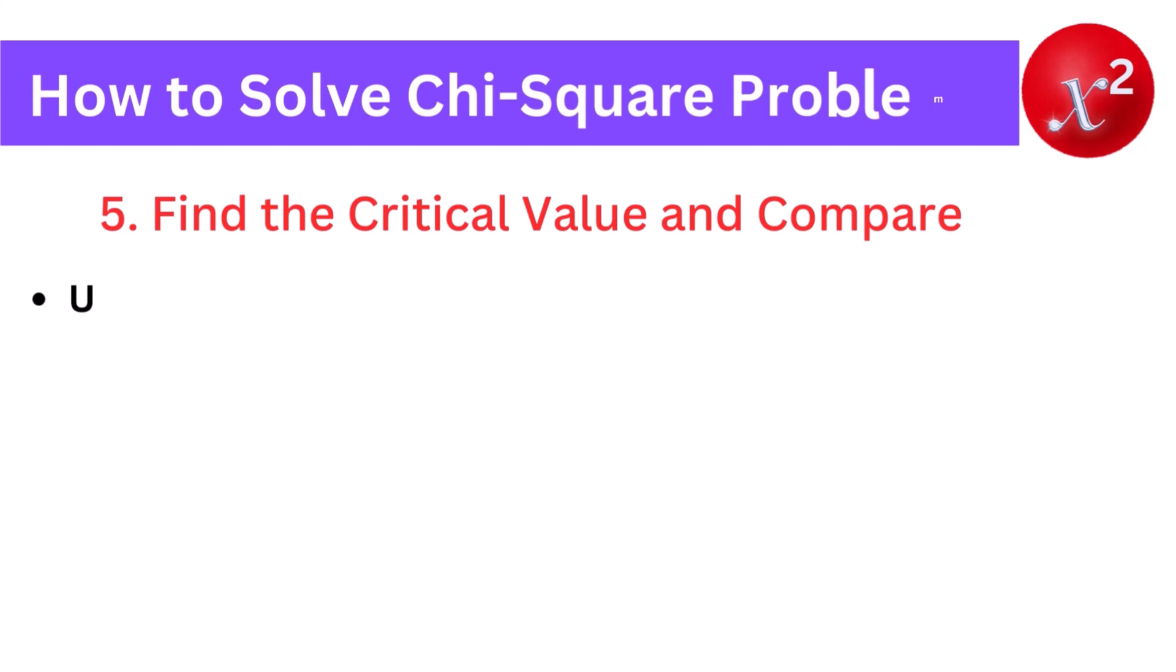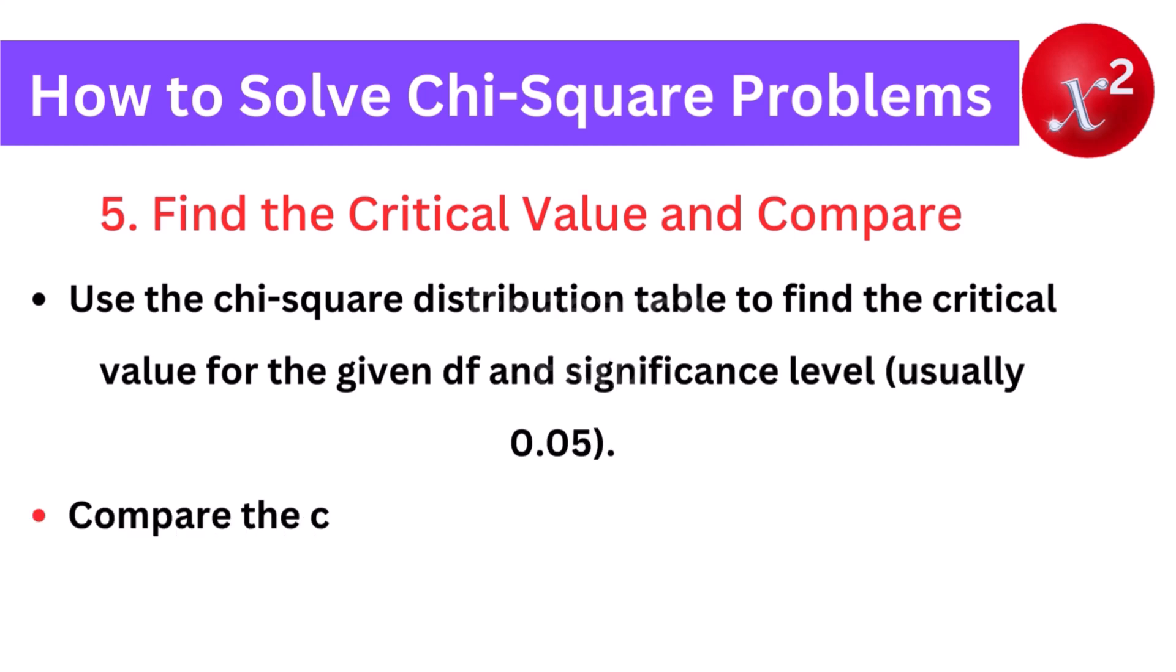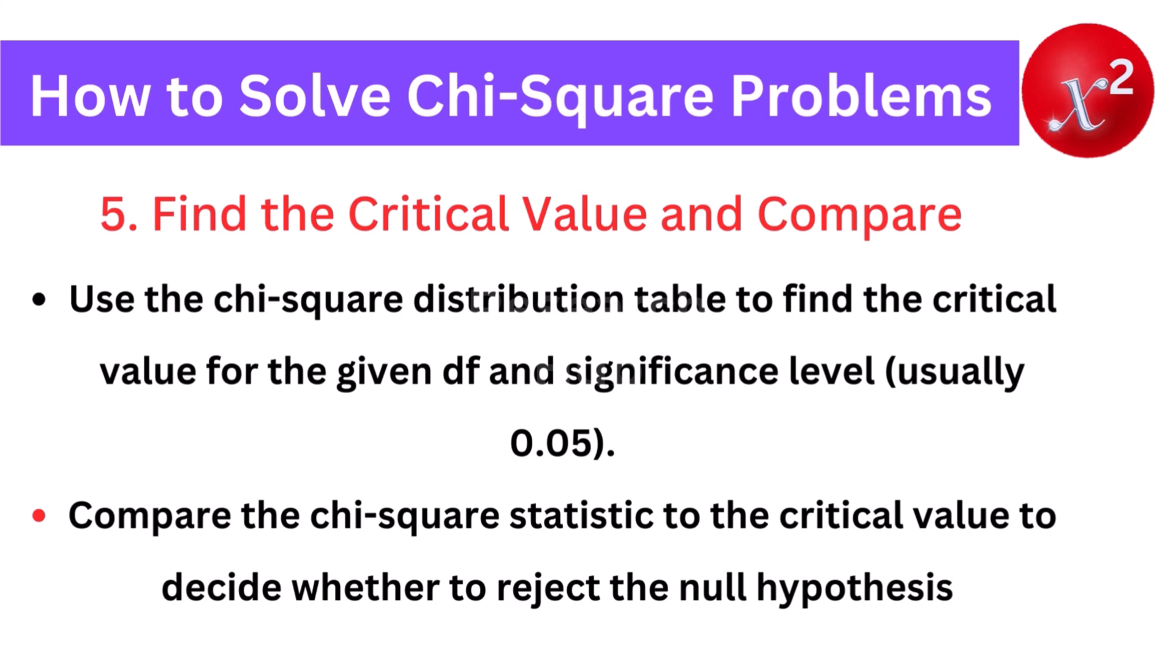5. Find the critical value and compare. Use the chi-square distribution table to find the critical value for the given Df and significance level, usually 0.05. Compare the chi-square statistic to the critical value to decide whether to reject the null hypothesis.